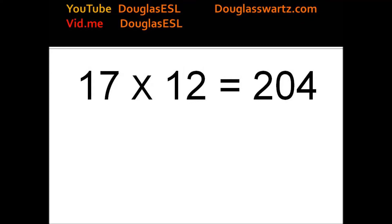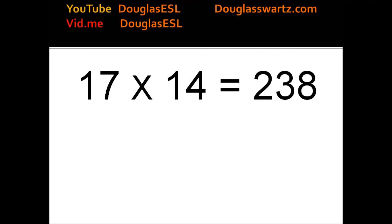17 times 12 equals 204. 17 times 13 equals 221. 17 times 14 equals 238. 17 times 15 equals 255.